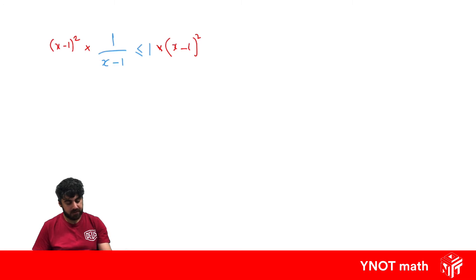And what happens here is the denominator and the square cancel out. So on this left-hand side, we're just left with x minus 1, which is less than or equal to 1 times x minus 1 squared. So let's expand that out. So we're going to get x squared minus 2x plus 1.